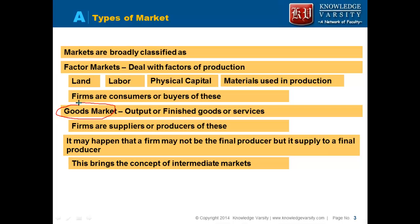The goods market refers to output — the finished goods or services. The firms supply these goods; they are producers in the goods market. Note that it may happen that a firm may not be directly selling its output to the consumer — it may be an intermediary. So a firm may not be the final producer, but it may supply to a final producer.